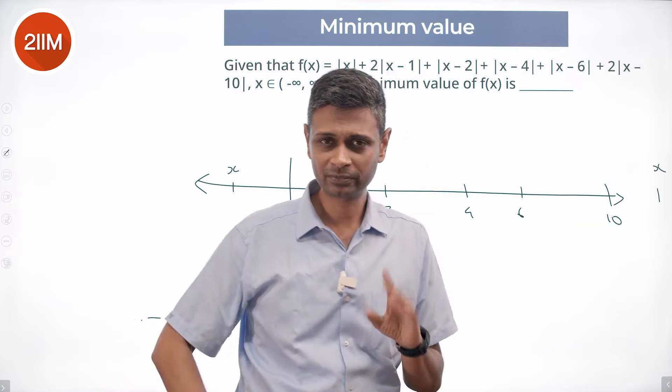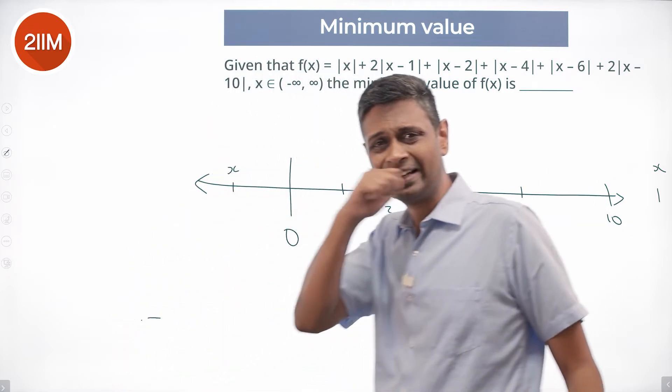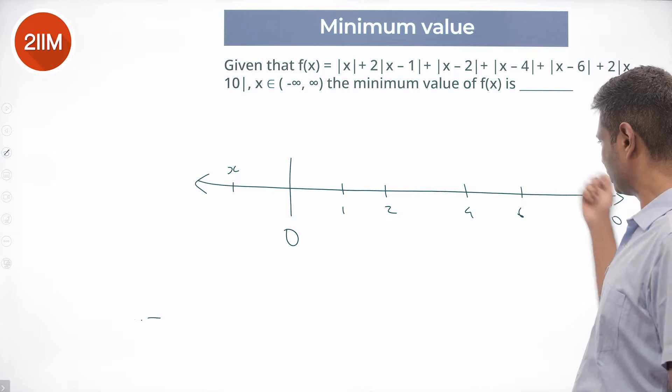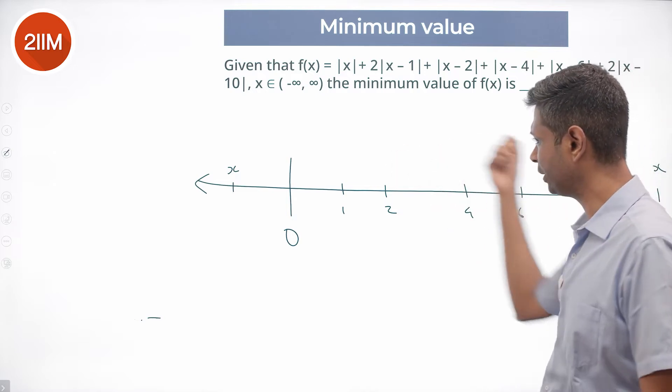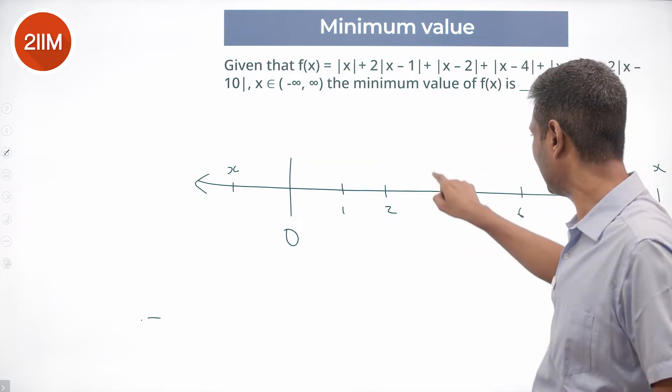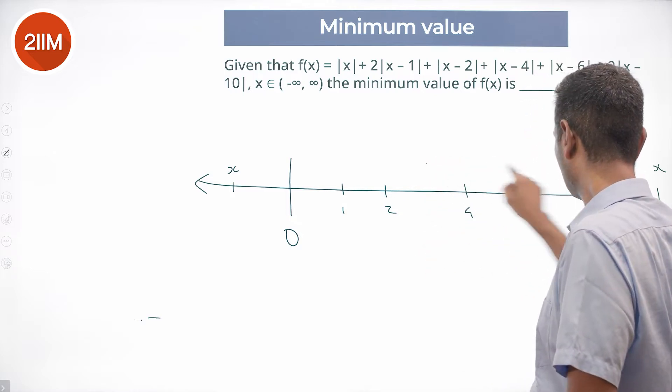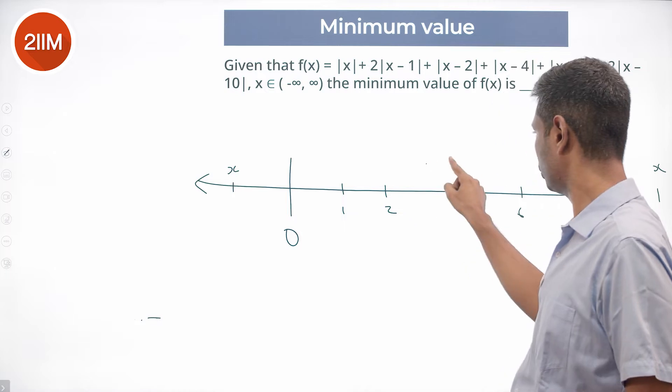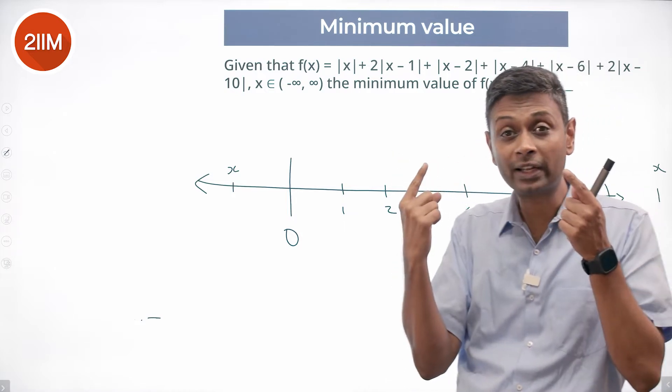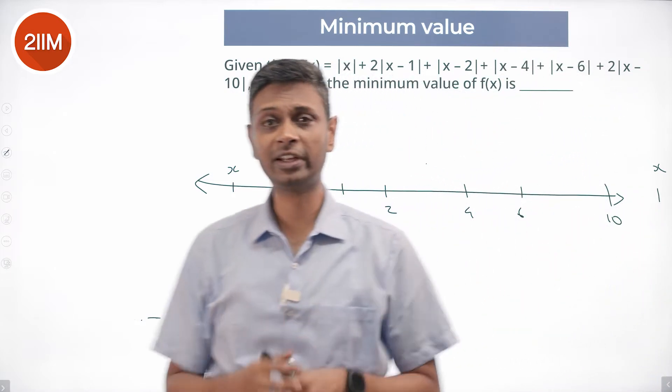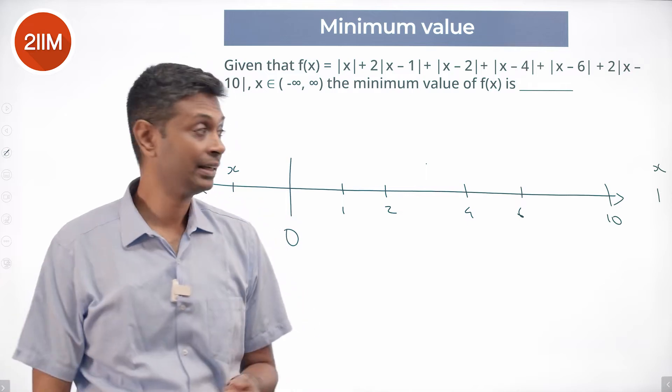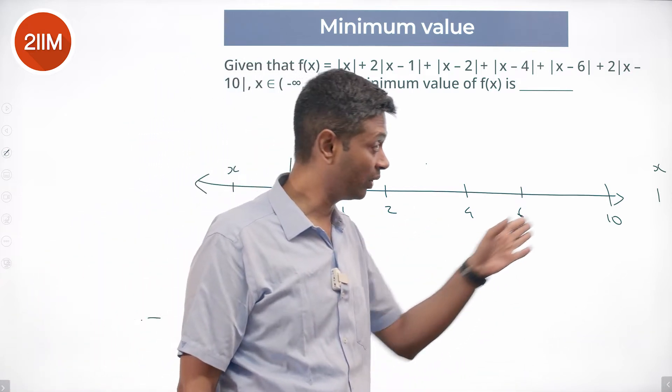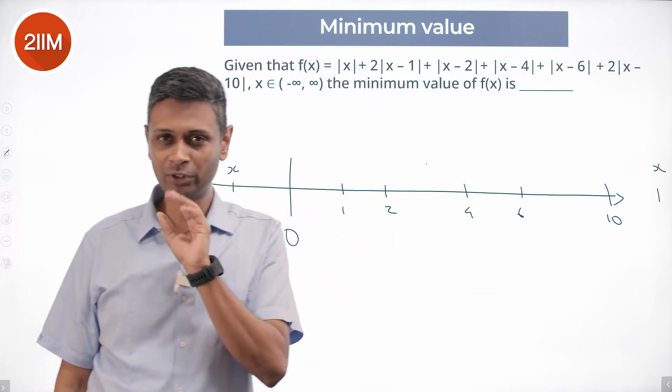But if I worry about 10, 10 to 6, 10 to 4, 10 to 2, 10 to 1, 10 to 0, instead of that, if I had X in the middle, 10 to 0, 10 to 6 to 1, 10 to 4 to 2, I can count like that. I can already intuitively sense that it will be better if I put X in the middle, not on one side. That's a beautiful idea.